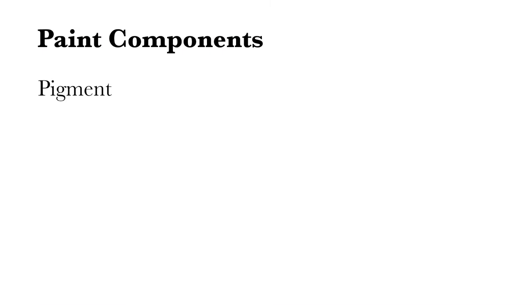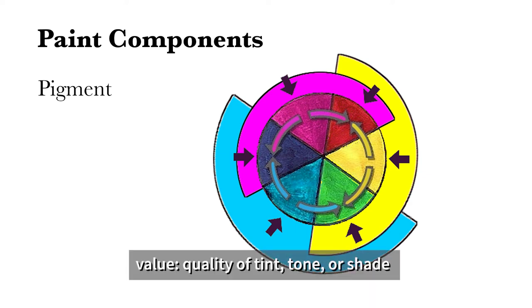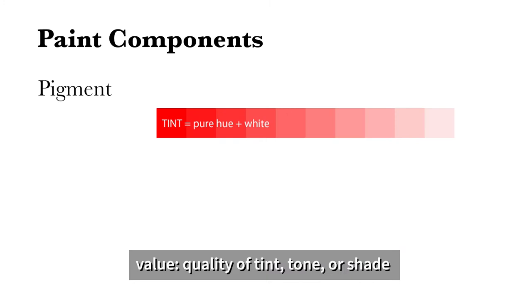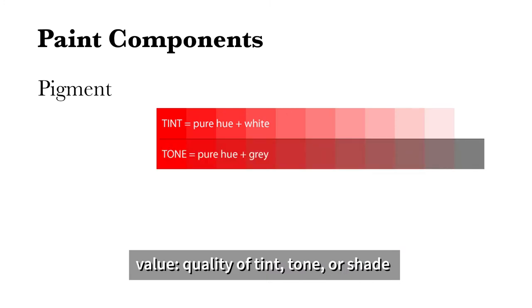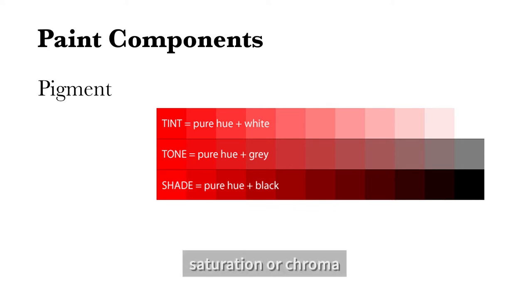Paint has four primary components: pigment, vehicle, binder, and filler. Pigment provides the color or hue of the paint. Value is the quality of tint or shade. Tint refers to adding white to a color. Tone refers to adding gray to a color. Shade refers to adding black to a color. Saturation or chroma refers to the brilliance or intensity of a color.